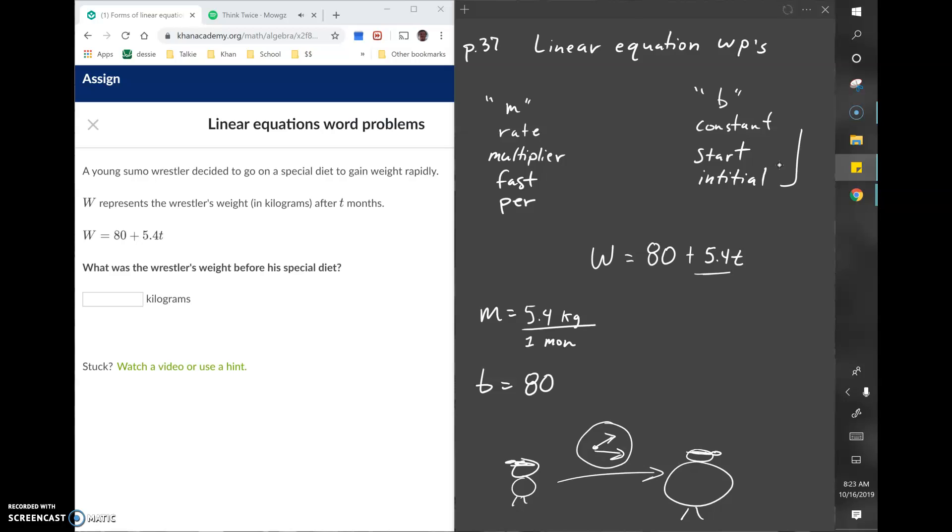This guy's going on a diet to gain weight to be a better sumo wrestler. He's gaining 5.4 kilograms every month. The B value represents 80 kilograms—his starting weight before he started his diet. The question asks what was the wrestler's weight before his diet, so the answer is 80 kilograms.